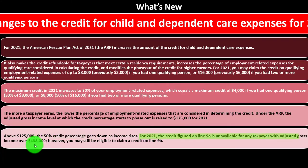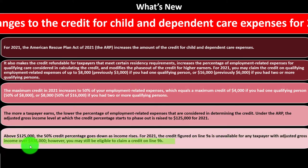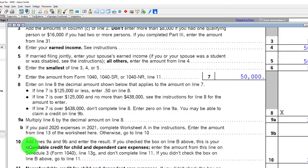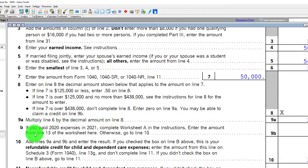For 2021, the credit figured on line 9A is unavailable for any taxpayer with adjusted gross income over $438,000 — a fairly high level. However, you may still be eligible to claim the credit on line 9B. On the tax form, you can see line 9A and line 9B.